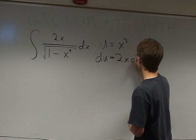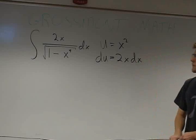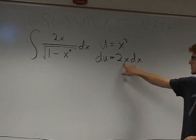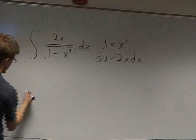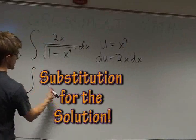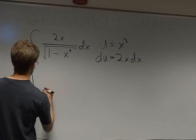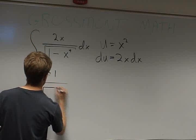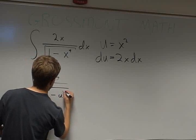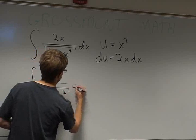which as you can see is 2x dx. We can then substitute for the integral of 1 over the square root of 1 minus u squared du.